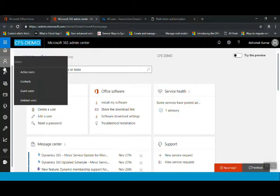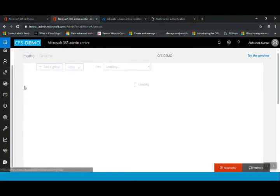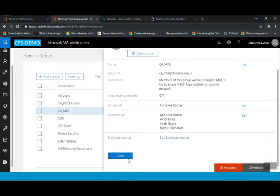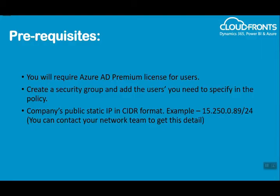I have already created a security group — conditional access multi-factor authentication — and you can see the members in it. You also need to get your company's public static IP in CIDR format. You can contact your network team to get this detail. This public static IP will be configured in the MFA trusted IPs, so any service accessed from outside this IP will be considered an untrusted or unknown location, and users will be asked for multi-factor authentication.